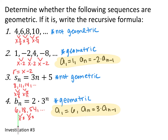And then the last one, I found the first three terms to be 6, 18, 54, which means we're multiplying by 3 every single time. So your common ratio is 3 — it is geometric. The recursive formula: a₁ is equal to 6, and a_n is equal to 3 times a_{n-1}. Geometric sequences — you're multiplying by the same thing every single time.